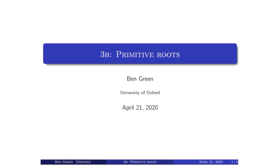This is the second section in chapter three of the course. Chapter three is about the multiplicative group z mod q z star, and this section B is really going to be all about one theorem: the existence of primitive roots. That is to say, the fact that z mod p z star, where p is a prime, is a cyclic group. This section is geared towards the proof of this theorem.